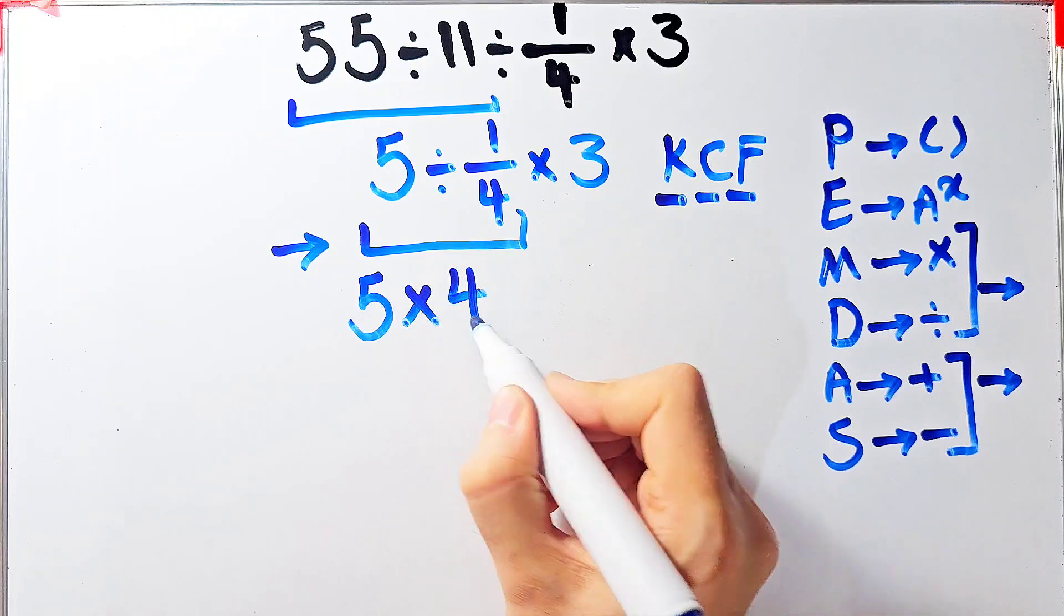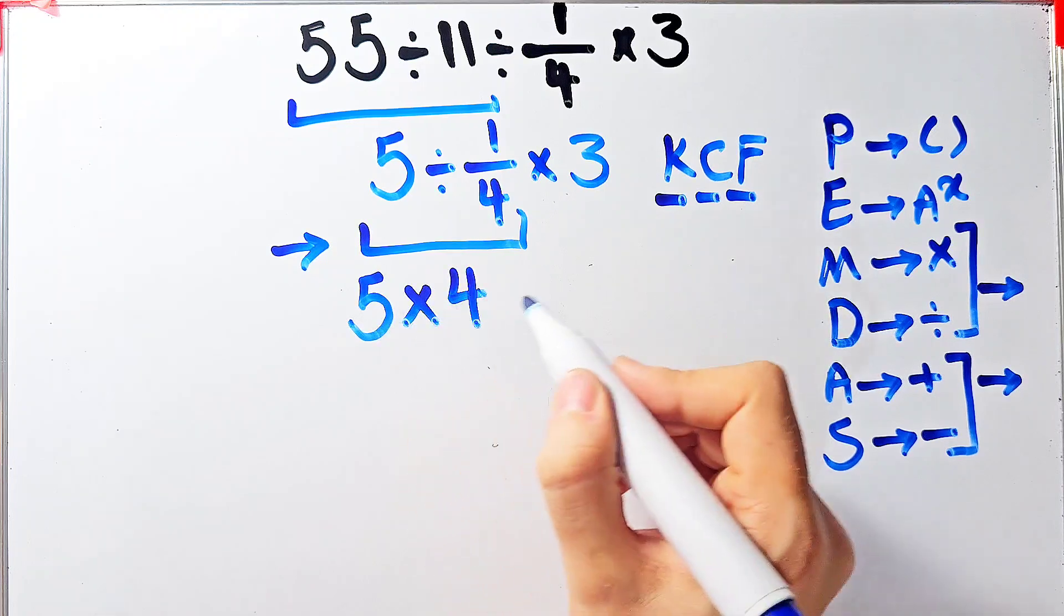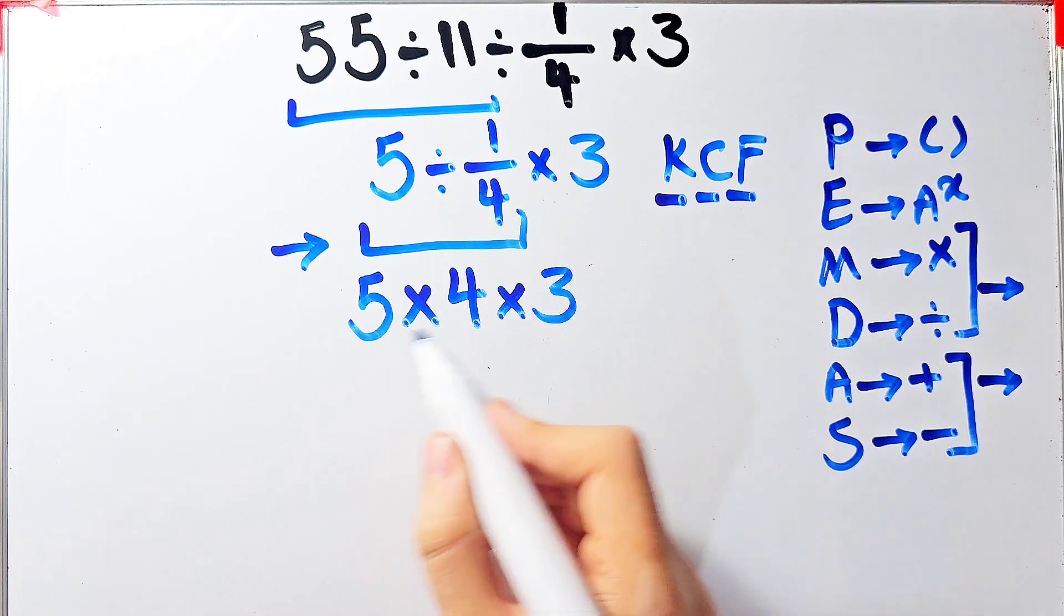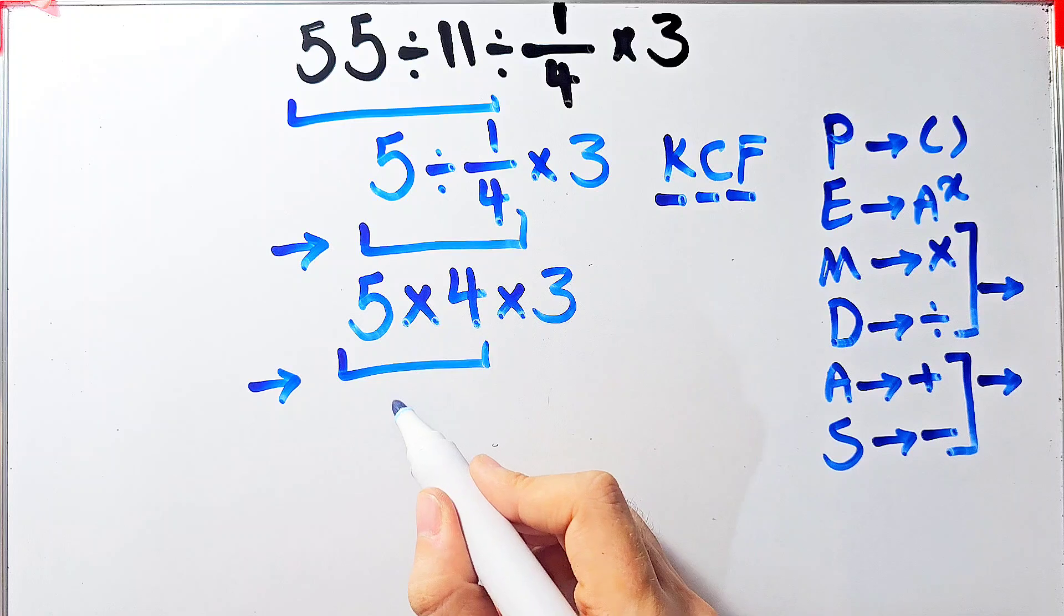Now we have a new expression: 5 times 4, then times 3. 5 times 4 equals 20. Now we have 20 times 3.